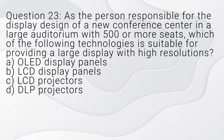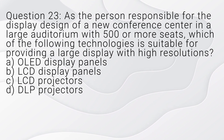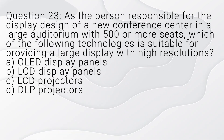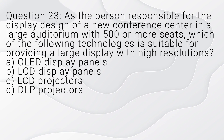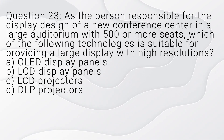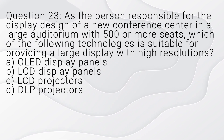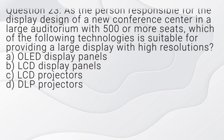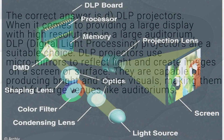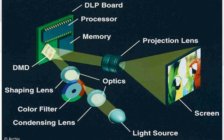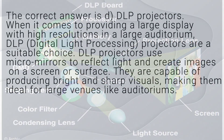Question 23. As the person responsible for the display design of a new conference center in a large auditorium with 500 or more seats, which of the following technologies is suitable for providing a large display with high resolutions? A. OLED display panels. B. LCD display panels. C. LCD projectors. D. DLP projectors. The correct answer is D, DLP projectors. DLP (digital light processing) projectors are a suitable choice for large auditoriums. They use micro mirrors to reflect light and create images on a screen or surface, and are capable of producing bright and sharp visuals, making them ideal for large venues.